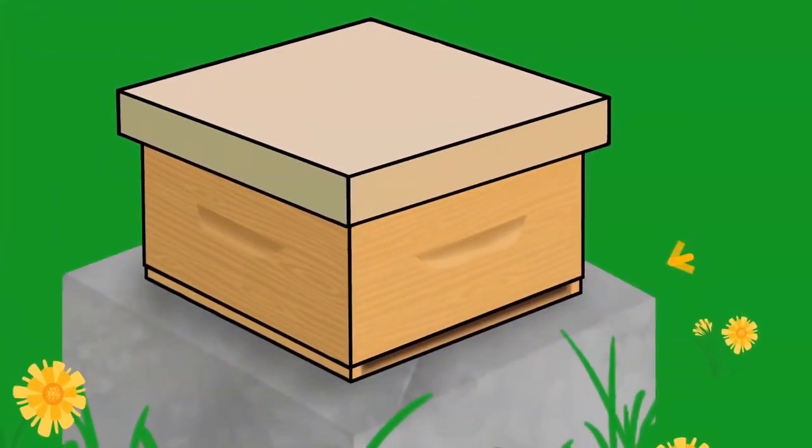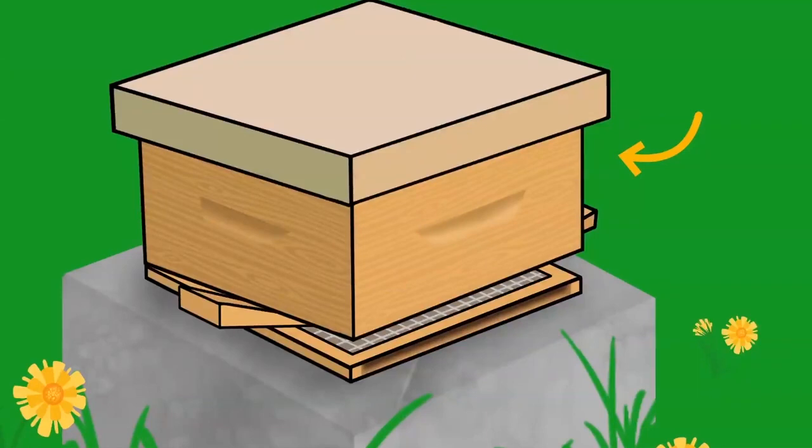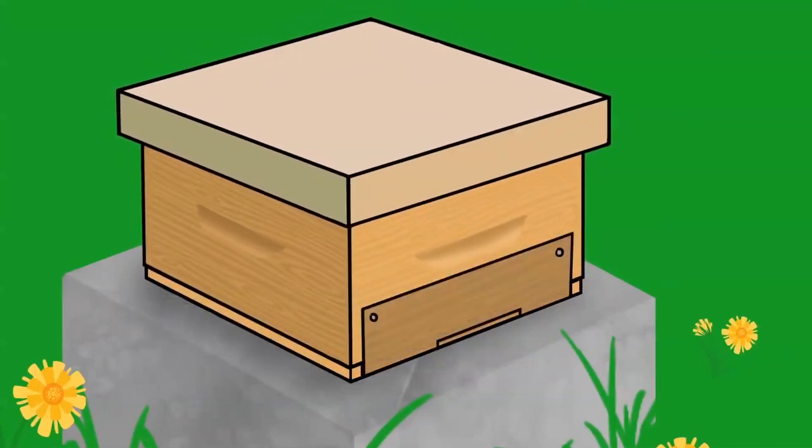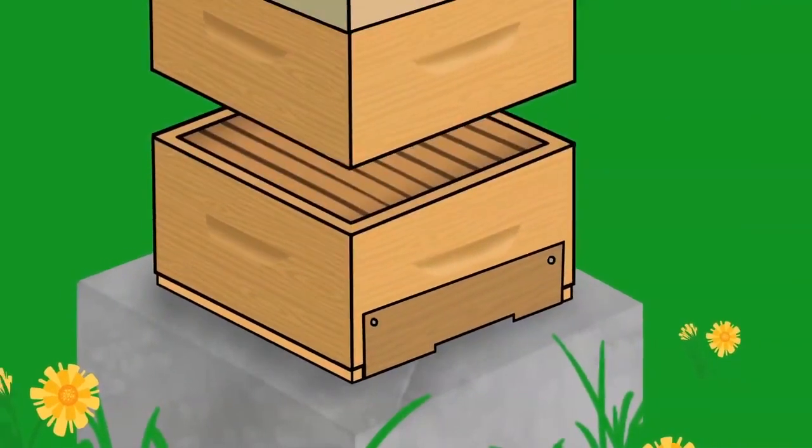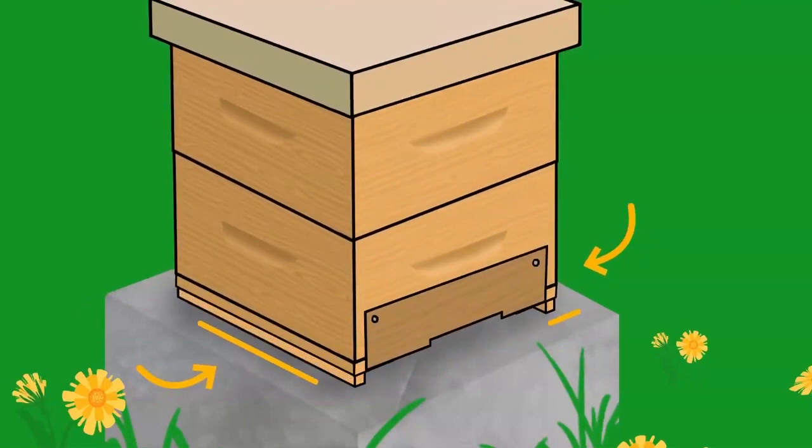If your hive entrance has obstructions between the landing board and the brood chamber, the brood chamber can be tipped back to meet the hive entrance requirements. Use wedges to hold the brood chamber in place. If your hive has permanently reduced entrances, add an extra brood box or super. Set it back by 1.3 centimeters or add shims to tip the bottom board to lift up the boxes.